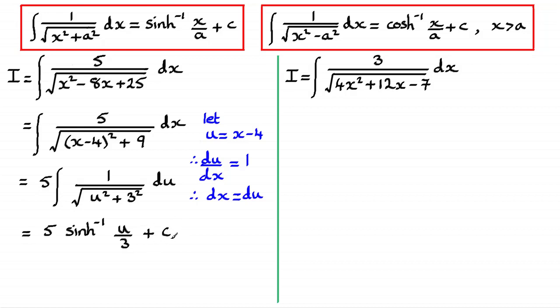So if I substitute back for u as x minus 4, then our answer is going to be simply 5 times the inverse sinh of all of x minus 4 over 3 plus that constant of integration c. So if you did have a go at that and got that one right, well done.